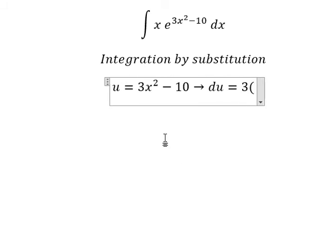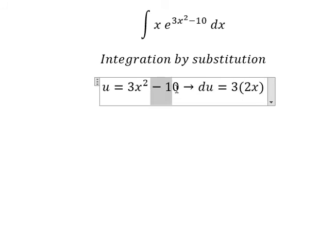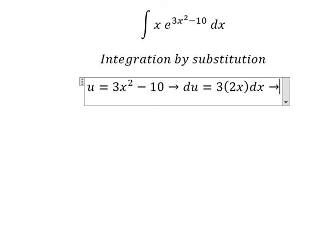The derivative of x to the power of 2, we have 2x. The derivative of negative 10, this is a constant, so you get zero. In here, because we don't have number 6.